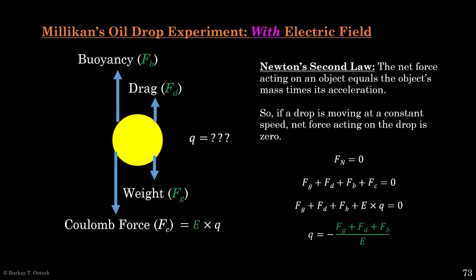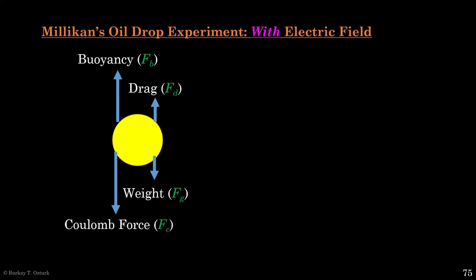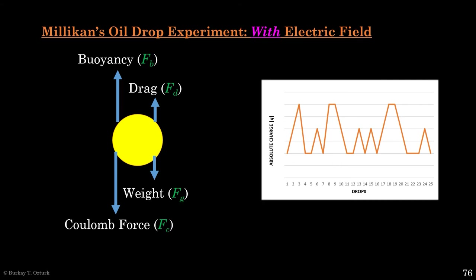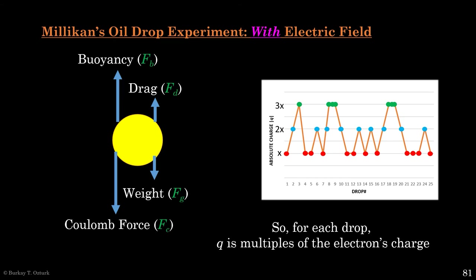We know all these values, or at least we can compute them, so we can compute the charge of the oil drops. But how does knowing the charge of an oil drop help us know the charge of a single electron? When Millikan graphed the charge of each drop, something interesting emerged: some drops were all at one value, some at another, and some at yet another — and very interestingly, these values are all multiples of a particular value. That means for each drop, Q is a multiple of the electron's charge. Finally, we know what it is: 1.602176634 times 10 to the power minus 19 Coulombs.